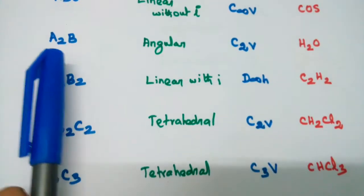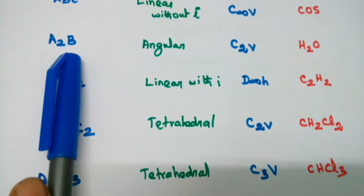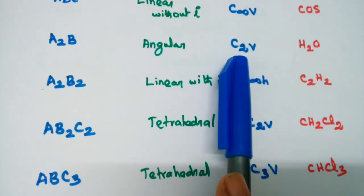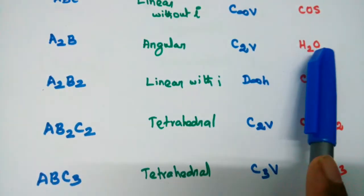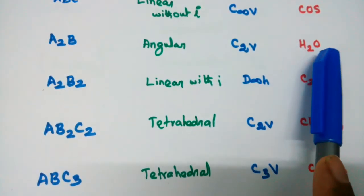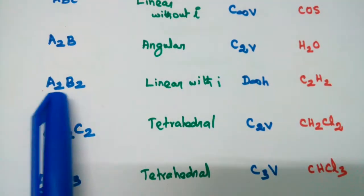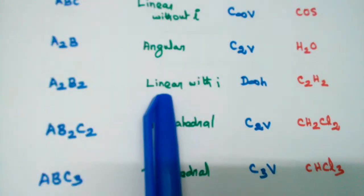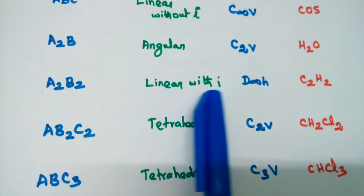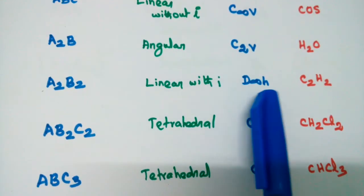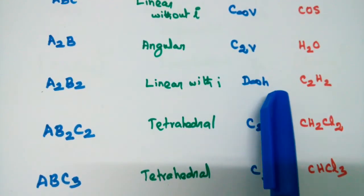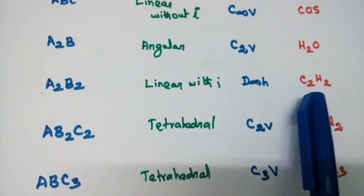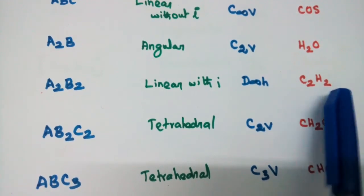Next, A2B geometry angular, point group C2v, example water molecule H2O. General formula A2B2, geometry linear with identity, point group D∞h, example C2H2 acetylene.